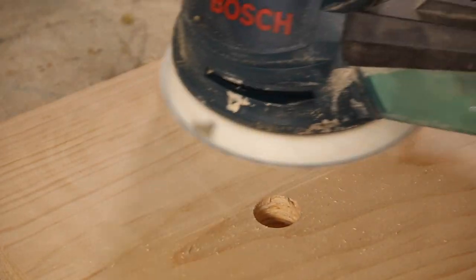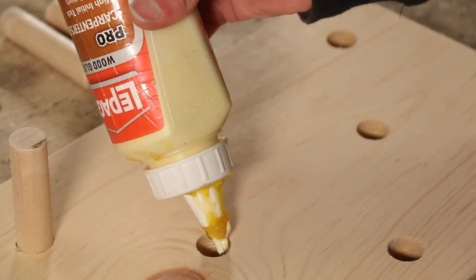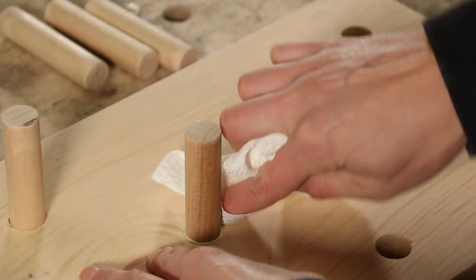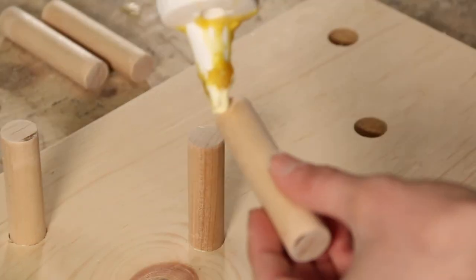Once my holes were done, I sanded everything down. I put some wood glue in the hole and on the dowel, and made sure to clean up any excess glue.